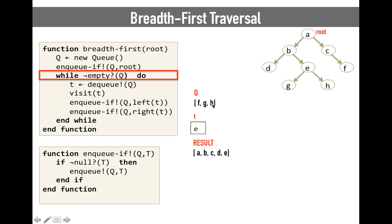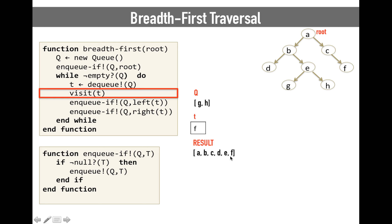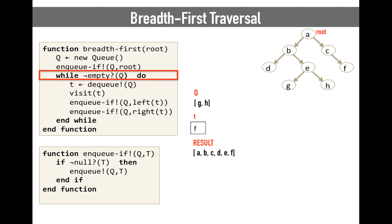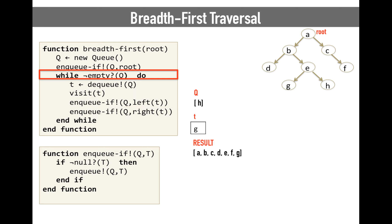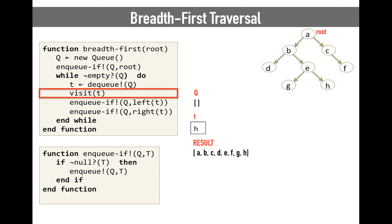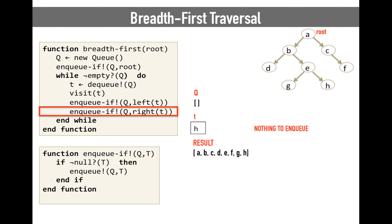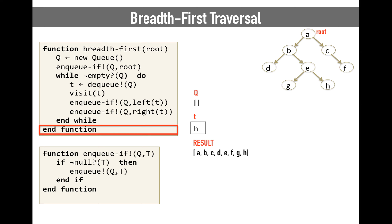We go back — still elements to process — we dequeue the next, which is F. We visit it, put it in our result data structure. F has no children, so nothing to enqueue. We go back, dequeue the next, which is G. G is visited but has no children, so we just pass through the enqueueIf function. We still have one element in the queue, which is H — dequeue it, visit it, nothing to enqueue. We have visited all the nodes in the tree, so our queue is empty and we finish. This is our result: A, B, C, D, E, F, G, H — exactly the result we were expecting.